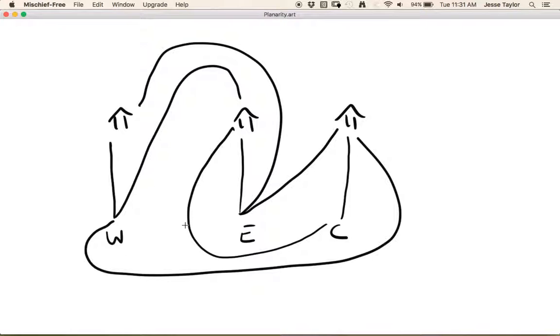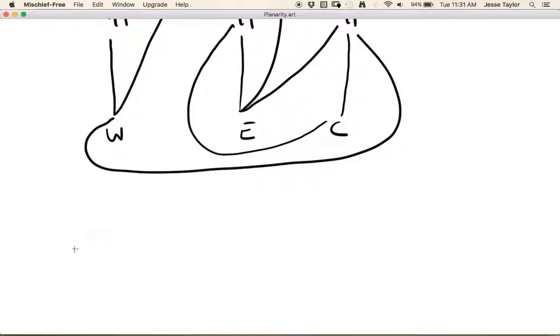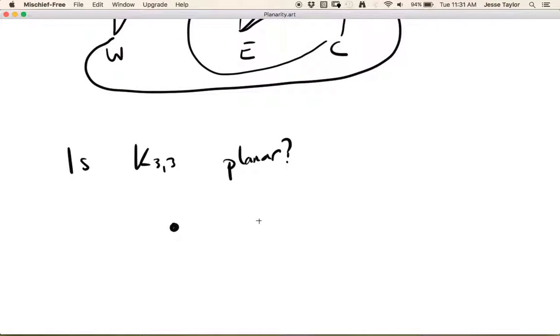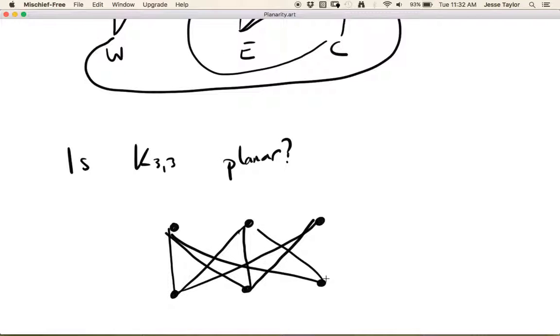So really what this is asking us, in graph theory terms, is: is the graph K33 planar? Remember K33 is the complete bipartite graph with three vertices in each side. So here's three vertices representing houses. Here's three vertices representing utility companies. And so this is the graph in question. Every vertex on the top goes to every vertex on the bottom, and vice versa. And it turns out the answer is no.